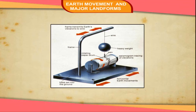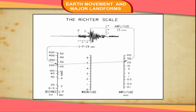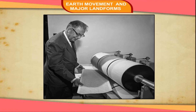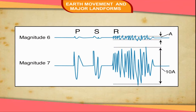Measuring Earthquakes. The earthquake waves are recorded by an instrument called a seismograph. The science of earthquakes is called seismology. Seismologists are experts who study the pattern of earthquakes. The Richter scale, designed by an American seismologist Charles Richter, is used to measure the magnitude of an earthquake. This scale has a range from 0 to 9. The higher the number on the scale, the greater is the magnitude and destruction. Earthquakes measuring above 6 on the scale are very destructive.